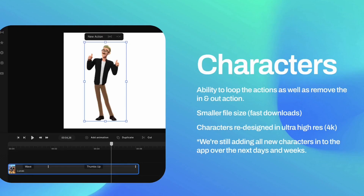They've also made a massive update to characters. They had to recreate the way characters work, so now you have the ability to loop your actions and remove the end part of an action. For example, if you've got a character you just want to stay seated, you can remove the part where he stands up or sits down, so you can have a continuous loop — say, a character sitting down drinking coffee. The characters are also about 75 to 80% smaller in file size than the original Create Studio characters, enabling faster downloads and less storage use. Additionally, the characters have been redesigned in high resolution up to 4K, so they'll look really clean and crisp in high-resolution videos.